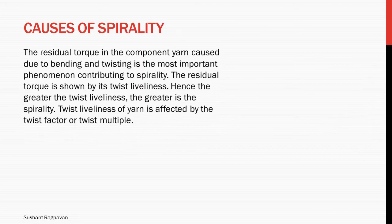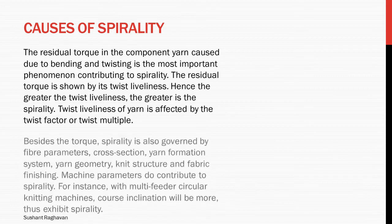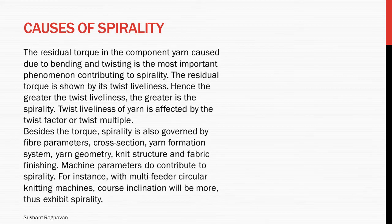The residual torque in the component yarn caused due to bending and twisting is the most important phenomenon contributing to spirality. The residual torque is shown by its twist liveness; hence, the greater the twist liveness, the greater is the spirality. Twist liveness of yarn is affected by the twist factor or twist multiplier. Besides torque, spirality is also governed by fiber parameters, cross section, yarn formation system, yarn geometry, knit structure, and fabric finishing.